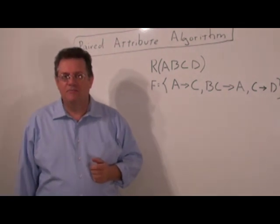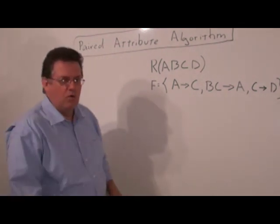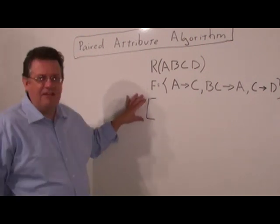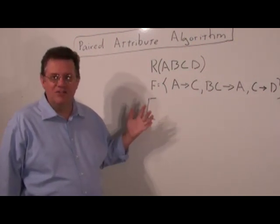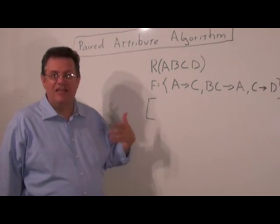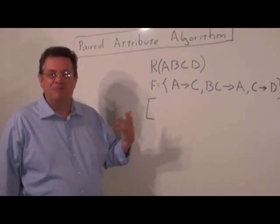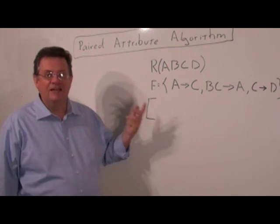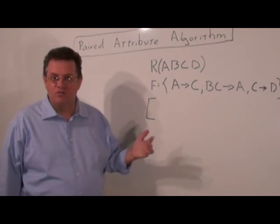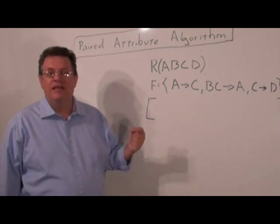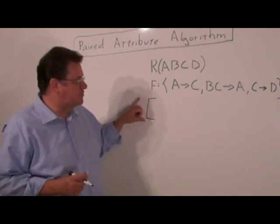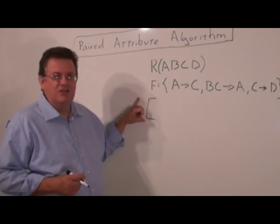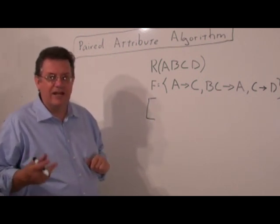In the paired attribute algorithm we have a main routine which takes the attributes in pairs such as AB, AC, AD, BC, BD, CD, and it looks for a violation which is talked about on page 14 of the unit 6 notes. If we have a violation we go into what's called a decompose routine. Otherwise we stay at the main routine.